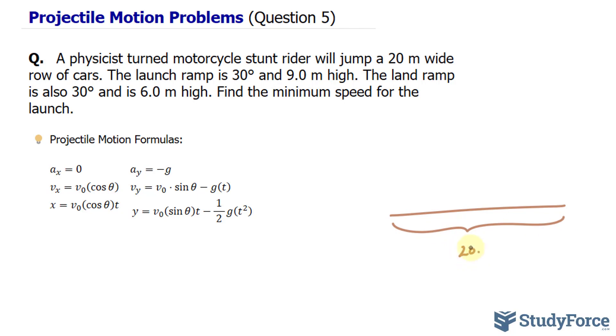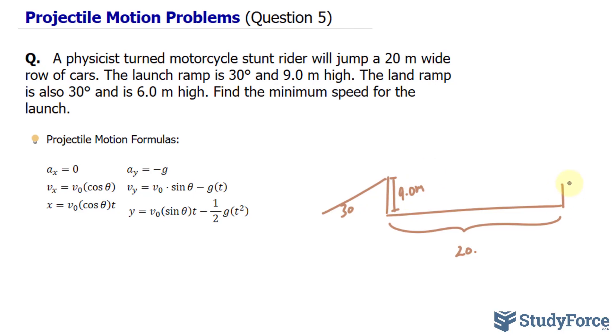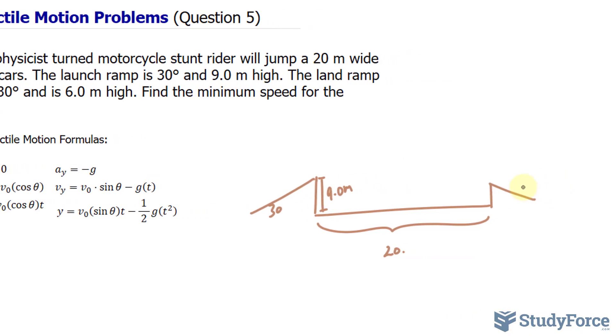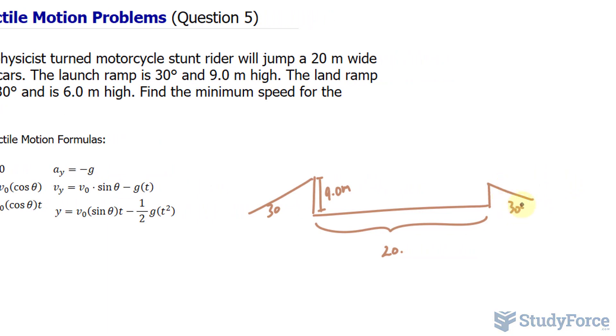There is a launch ramp over here and it is 30 degrees to the horizontal. It's also at a height of 9 meters. The land ramp is on this side, also 30 degrees, but it has a height of 6.0 meters.